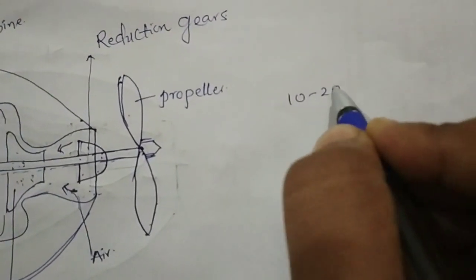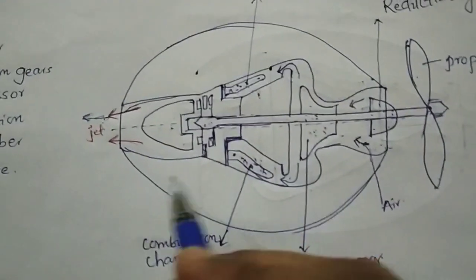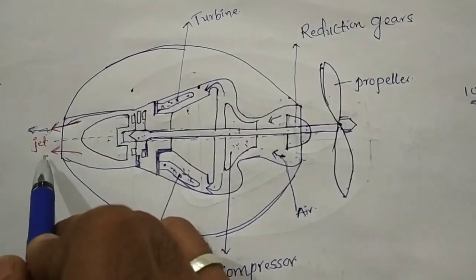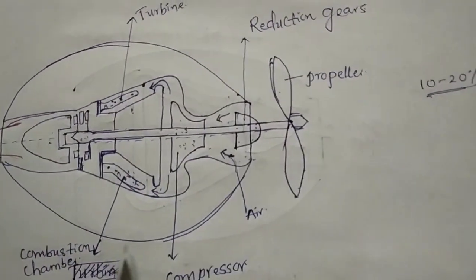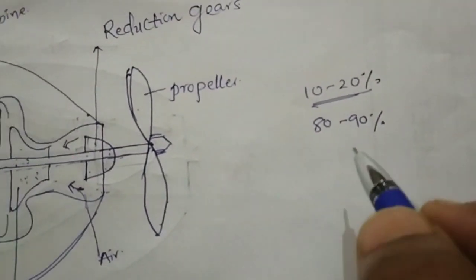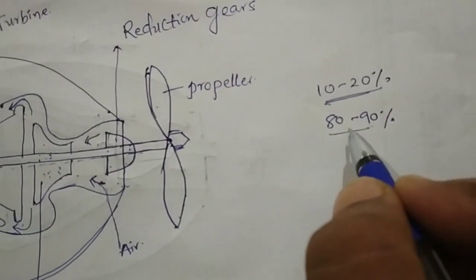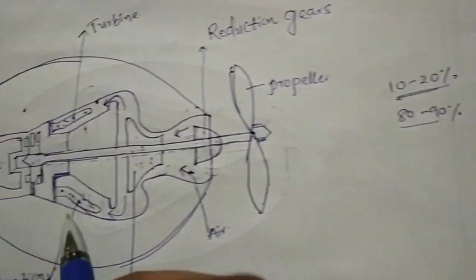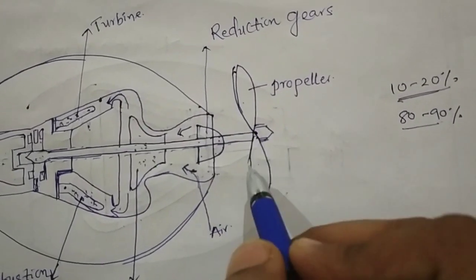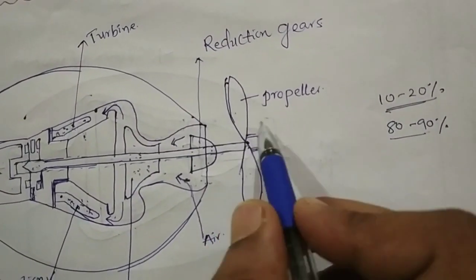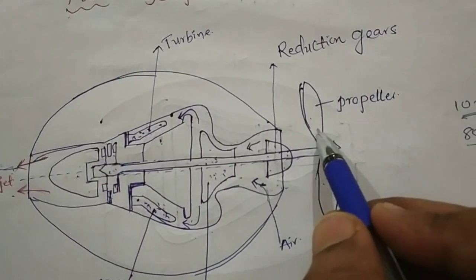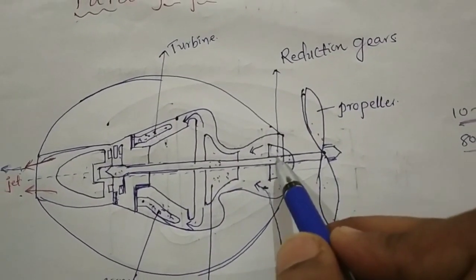Only 10 to 20 percent of the forward movement is due to the reaction of the jet. But 80 to 90 percent of the forward movement takes place because of the propeller. The speed of the propeller is controlled by the reduction gears.